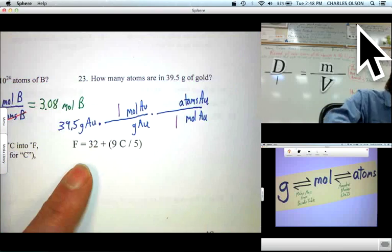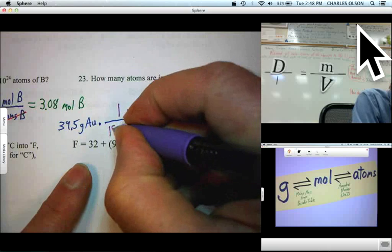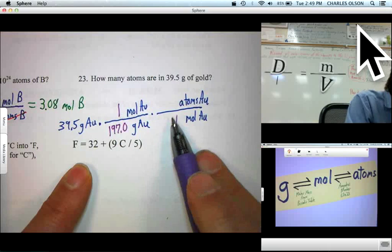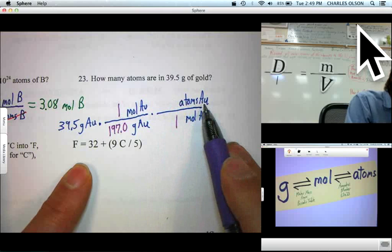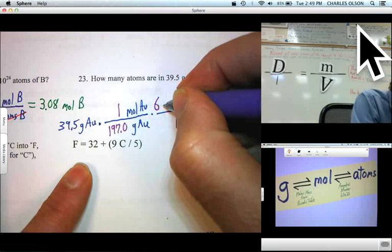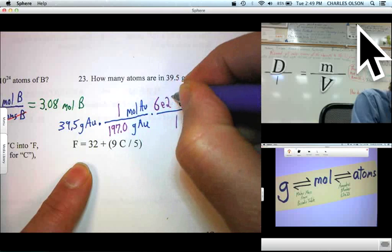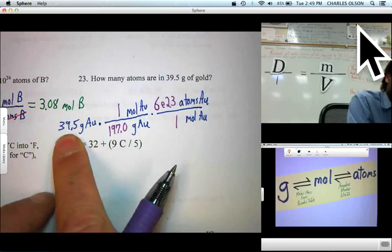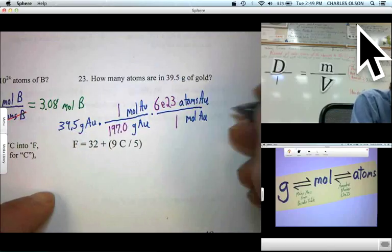We round that to 197.0 grams per mole. How many atoms of gold in one mole of gold? Oh, I know that's 6 times 10 to the 23rd. Conversion factors don't affect sig figs, so we'll expect three sig figs in our answer. We put an equal sign.